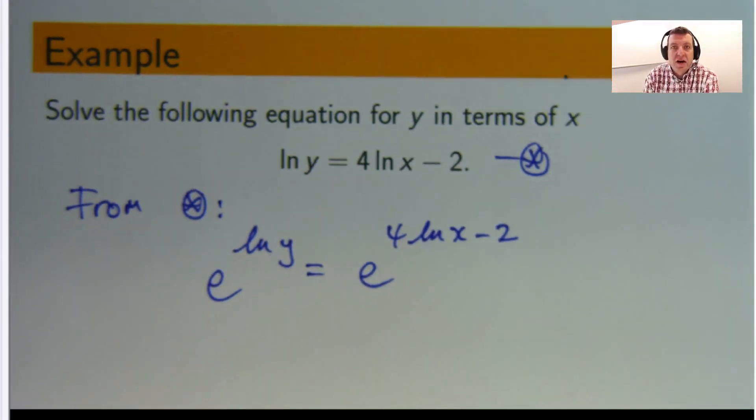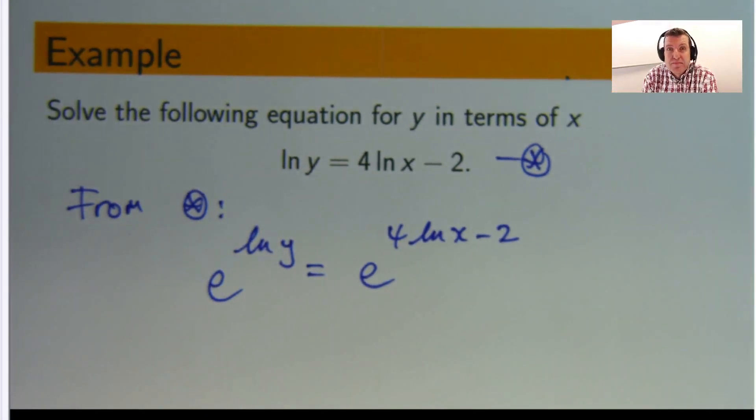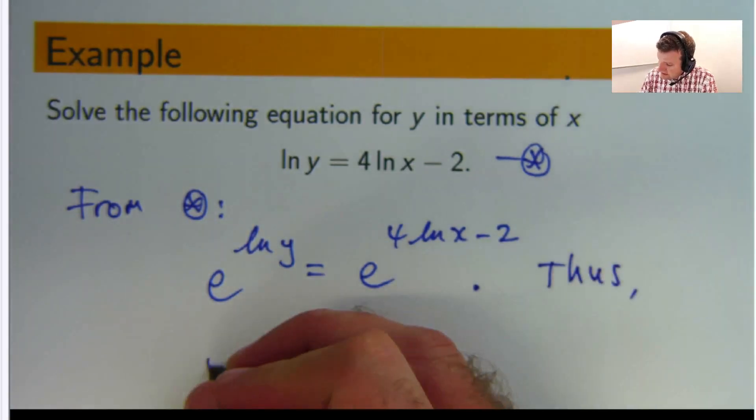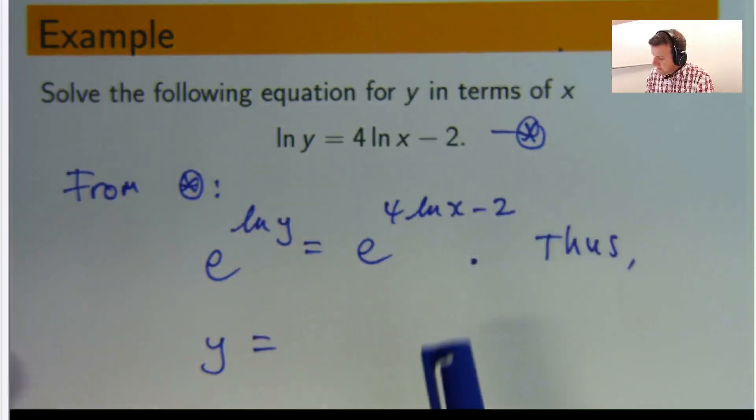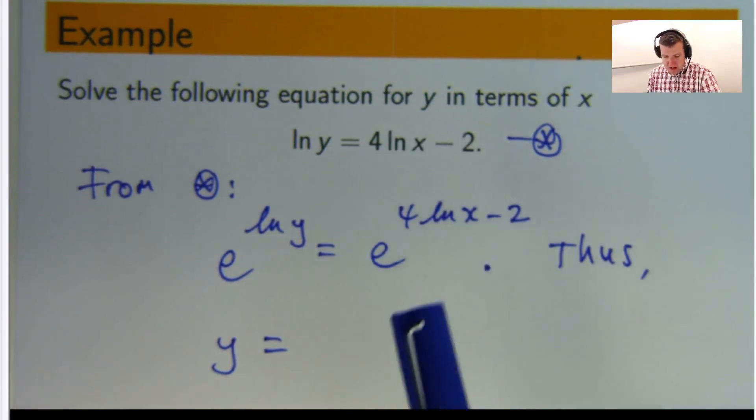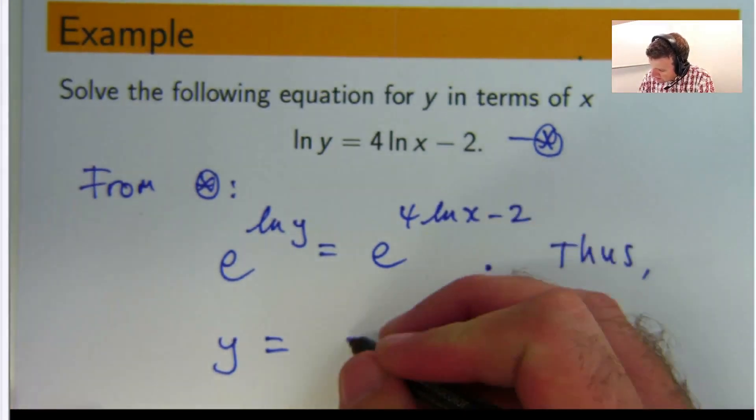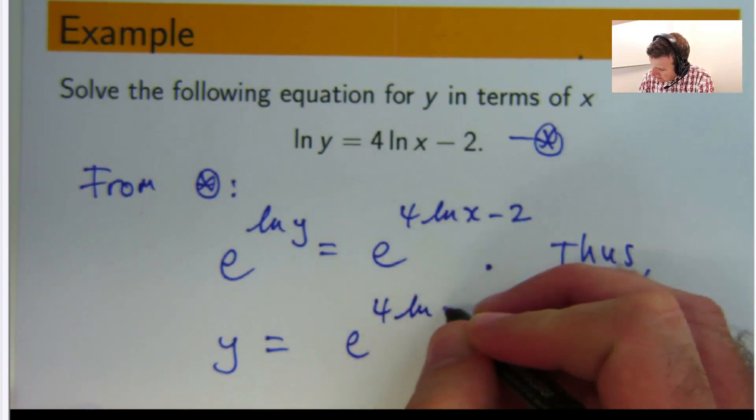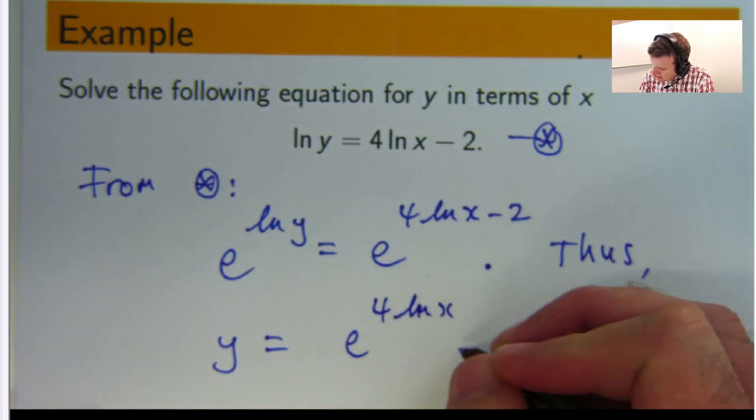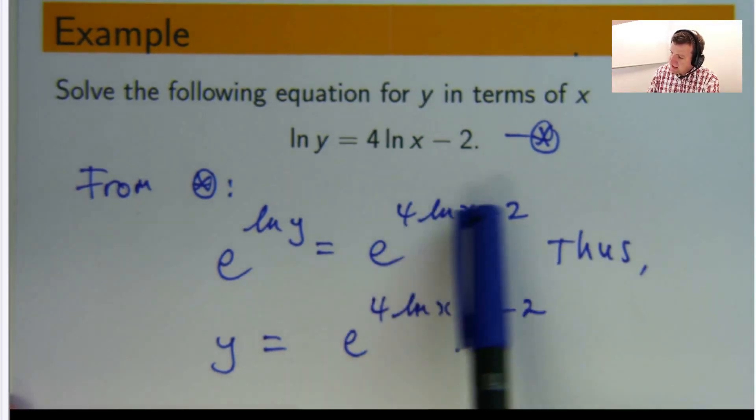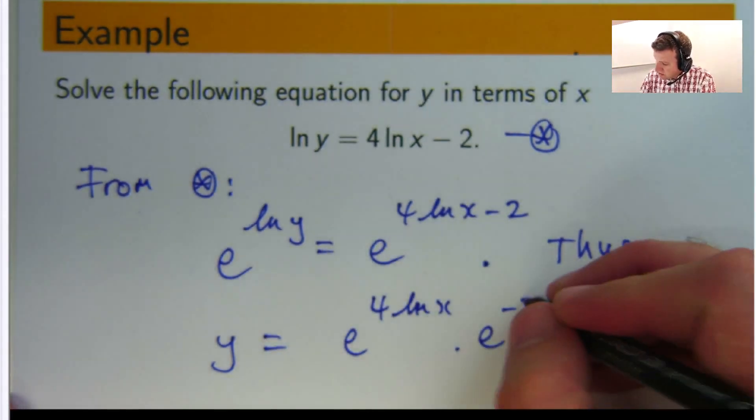On the right hand side I'm going to use basic power laws to simplify that as much as I can. So over here I can break this up. So it's e to the 4 log, natural log x, times e to the negative 2. Because that's just the one exponent law or power law.